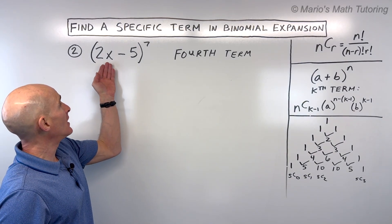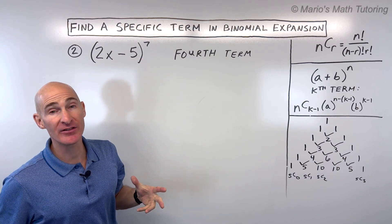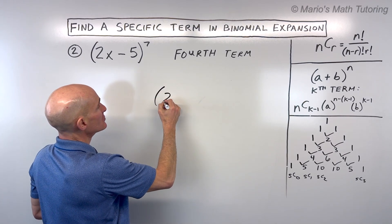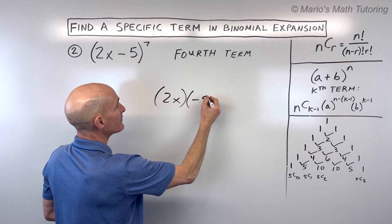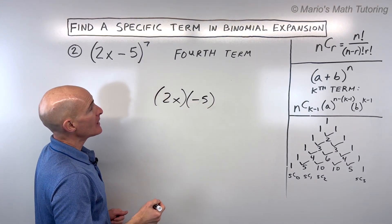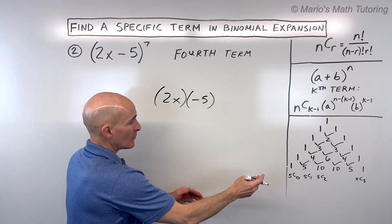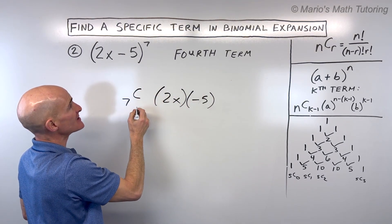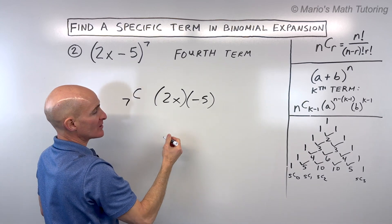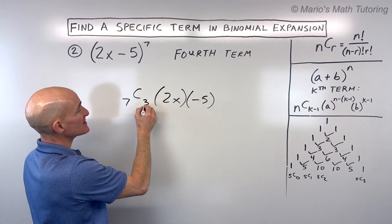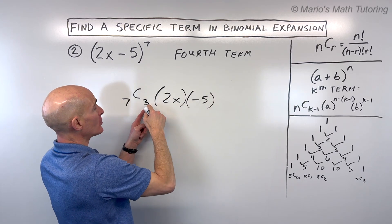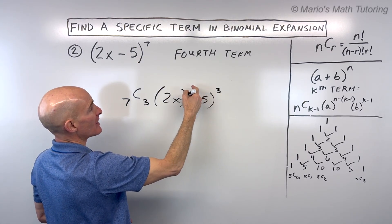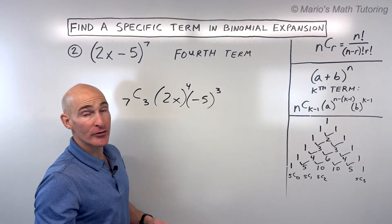Example two: find the fourth term of (2x minus 5) to the seventh power. First, write the two terms: 2x and negative five, making sure to capture the negative. We're on the seventh row. For the fourth term, it's one less, so this is 7C3. The second term's exponent and the r value match at 3, and the two exponents add to seven: seven minus three is four.